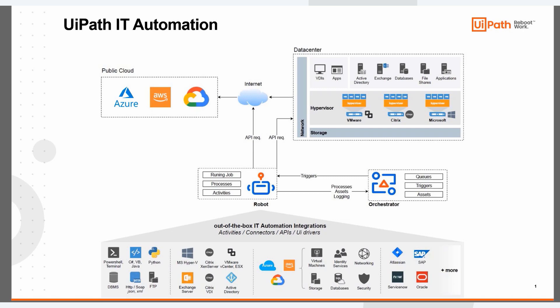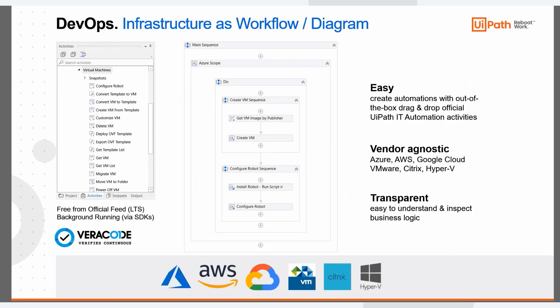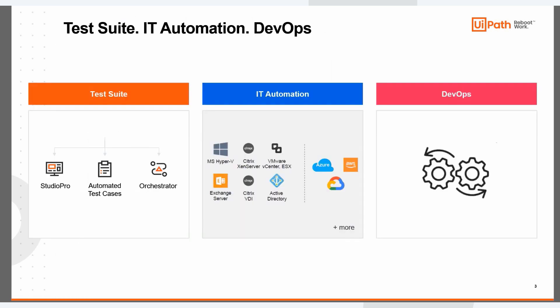The solution is powered by the UiPath IT automation official activities that enable us to automate all areas of our IT ecosystem. They are freely available on our official feed, background running, and very secure. In today's DevOps space, complex infrastructure as code is the norm. However, with UiPath workflows built with easy-to-use drag and drop activities, simple visual diagrams are the ones actually creating and configuring the infrastructure. When we couple UiPath Test Suite and IT automation, it makes life much simpler for DevOps.